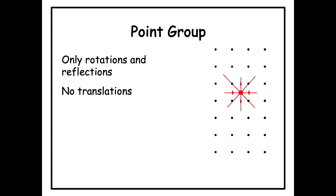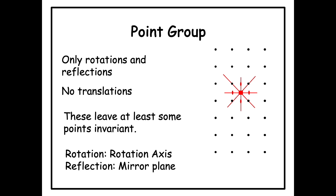Why do we call them point groups? Because rotations and reflections leave at least some point unchanged. Rotation leaves points on the rotation axis invariant, and reflection leaves all the points on the mirror plane or mirror line invariant — they don't move during the operation. Since some points are left invariant by these symmetry operations, they form a group called the point group.